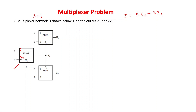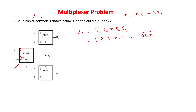We will find Z0 first. Z0 = S0'·I0 + S0·I1. Substituting, S0 = B so S0' = B', and I0 = A', I1 = A. This gives Z0 = B'·A' + B·A, which is the expression for A XNOR B (equivalently written as A XNOR B complement).